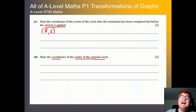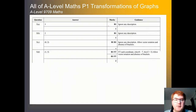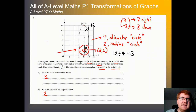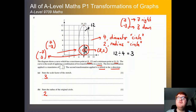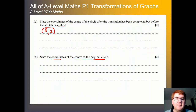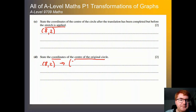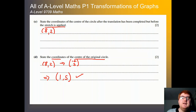Now we need to find the coordinates of the centre of the original circle — that is, going back on the translation. To get to this point we did a translation of (7, -3). However, we want to go backwards to the original circle, so we need minus 7 and plus 3: 7 left and 3 upwards. Taking the point (8, 2) and applying (-7, +3): 8 minus 7 equals 1, and 2 plus 3 equals 5. So the original centre of the circle is (1, 5).